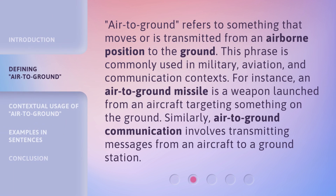Air-to-ground refers to something that moves or is transmitted from an airborne position to the ground. This phrase is commonly used in military, aviation, and communication contexts. For instance, an air-to-ground missile is a weapon launched from an aircraft targeting something on the ground. Similarly, air-to-ground communication involves transmitting messages from an aircraft to a ground station.